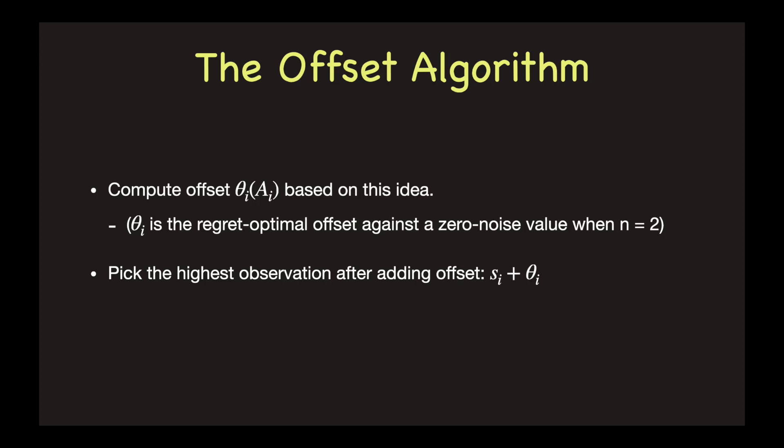For n equals 2, the two value case, where the first value has no noise, we can easily compute the best additive offset theta 2. And we define every theta i in this way, which is the optimal offset against a zero noise value when n equals 2. Note that theta i only depends on the noise distribution A i.